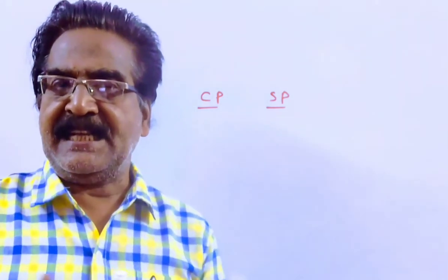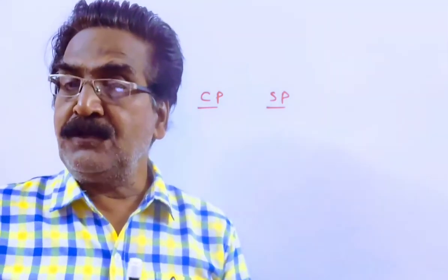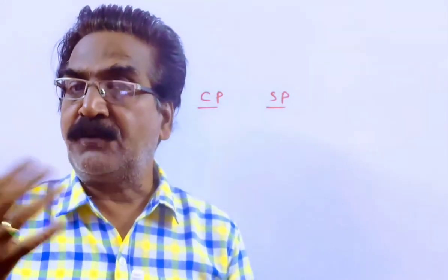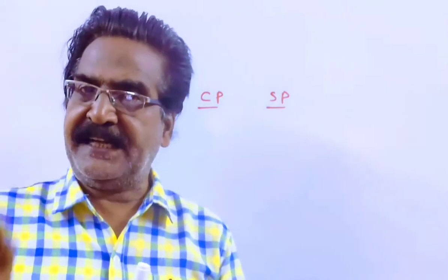A dishonest dealer sells his goods at 15% loss, but he uses a false weight and his overall profit is 25%. What is the weight he uses for a kilogram?